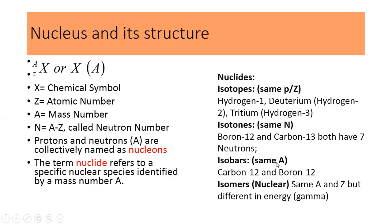If nuclides have the same mass number A, they are called isobars. For example, carbon-12 and boron-12 have the same mass number 12, but different atomic numbers and different numbers of neutrons. Additionally, some nuclides are nuclear isomers — they have the same A and Z (same atomic number and mass number) but differ in energy level, emitting different gamma rays. These are nuclear isomers of each other.